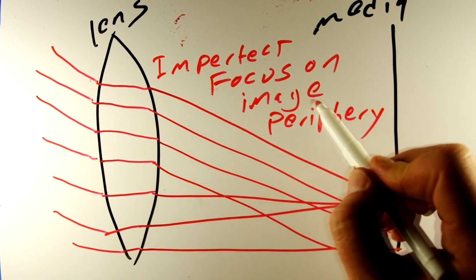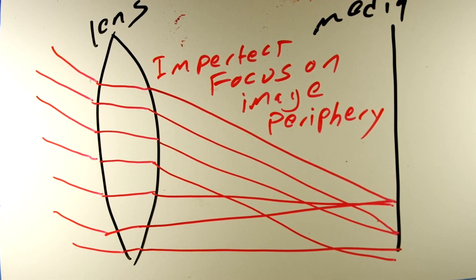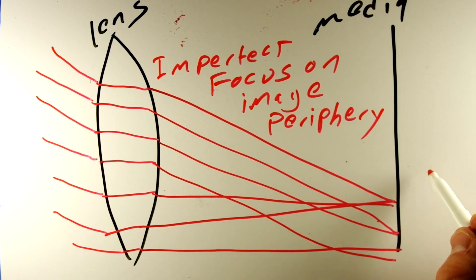Coma appears in an image typically on the edges. And what it is, is when you get close to the edge of a frame, a dot of light ceases to be a dot and turns into a cone of light or some other type of shape.